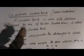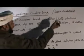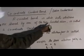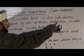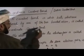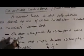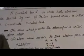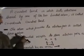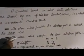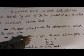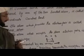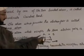A coordinate bond is one in which both electrons are shared by one of the two bonded atoms. The atom which provides the electron pair is called the donor atom. The atom which accepts the shared electron pair is called the acceptor atom.